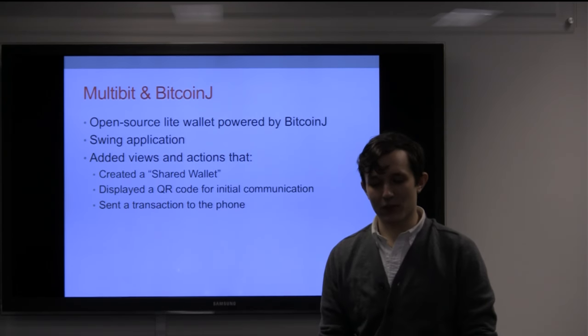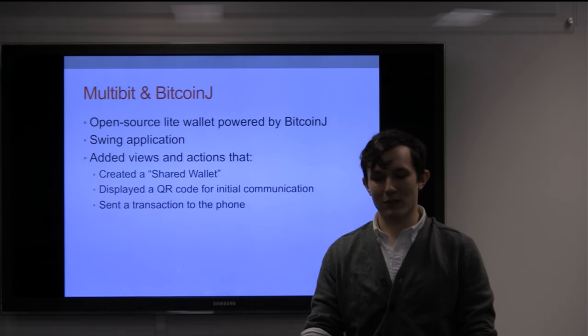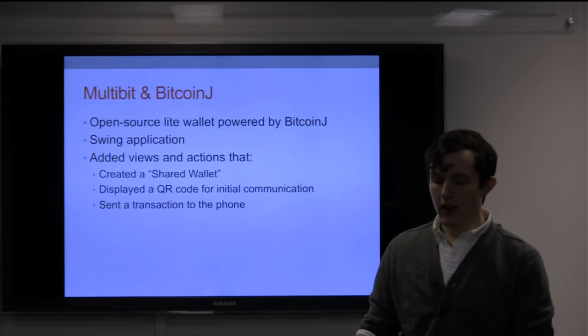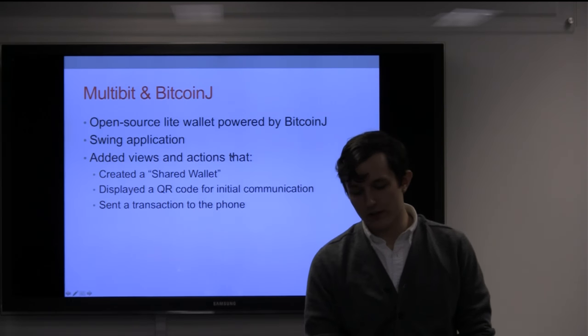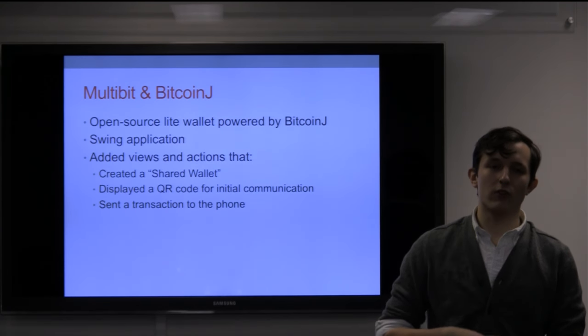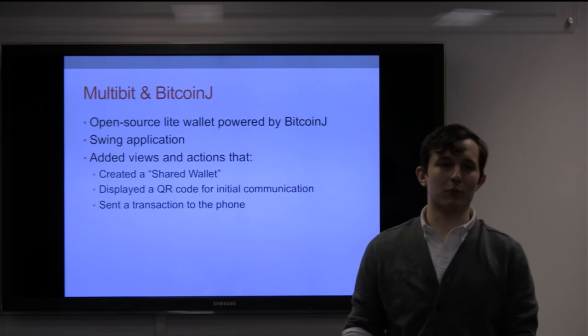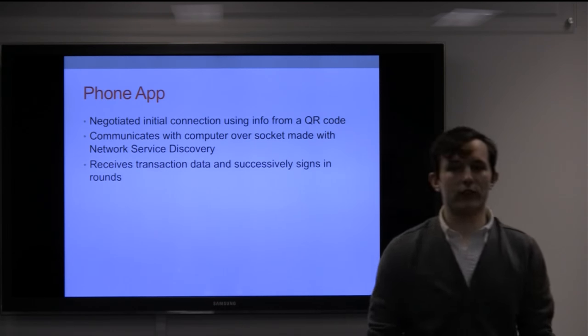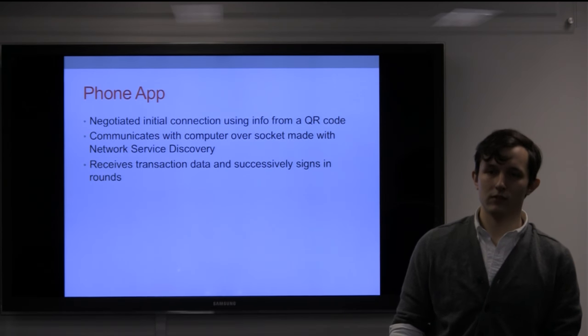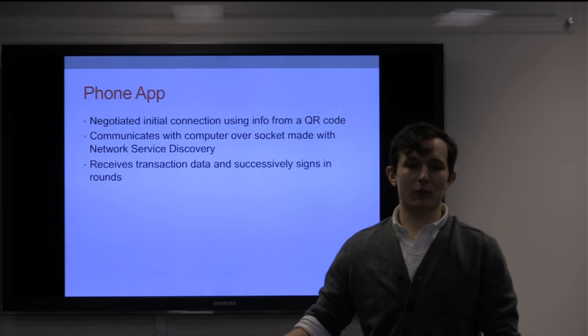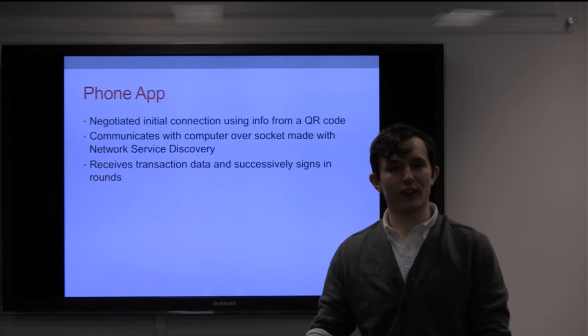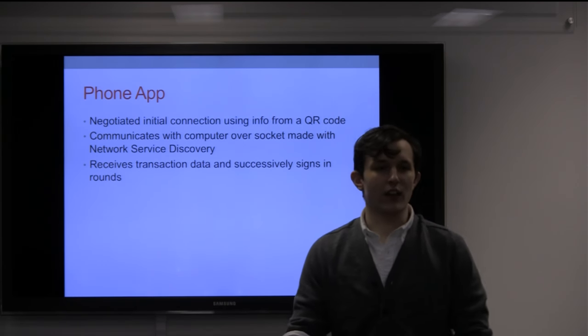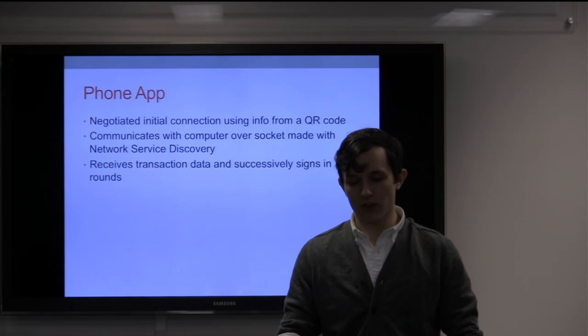It was built on top of multi-bit and Bitcoin J. Multi-bit's just an open source light wallet, a very standard swing application with a bunch of actions. We added views and actions that created a shared wallet, displayed QR codes that would hand over a certificate and a password used to initiate communication between the phone and the computer, and it would send a transaction to the phone to be signed. The phone app would scan the QR code using Google's ZXing package, break it up into the password and the certificate, and then use that with network service discovery to make an initial connection with the computer, negotiate, and receive key material.